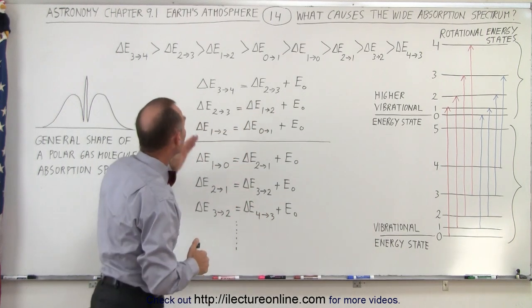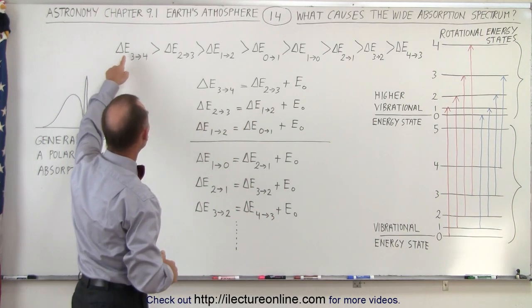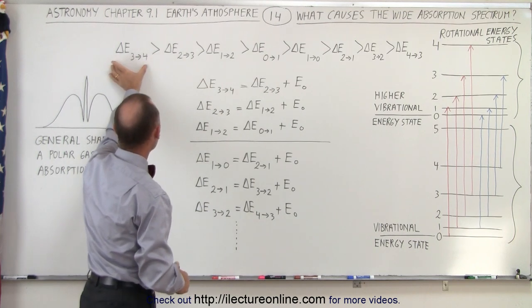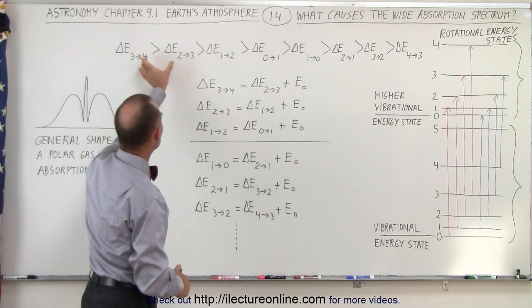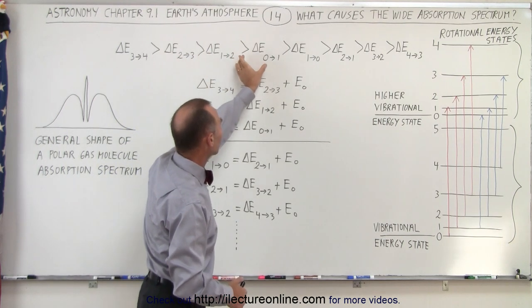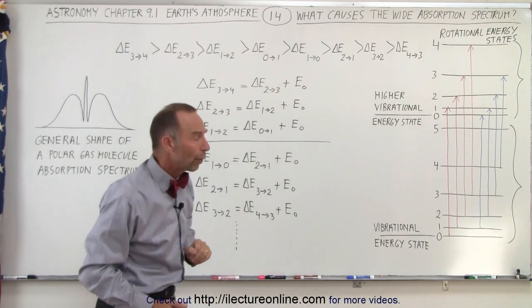When we look at these various jumps, let's say from 3 to 4, or 2 to 3, or 1 to 2, notice that the amount of energy difference between that jump is greater than the amount for this jump, and so forth, all the way through.